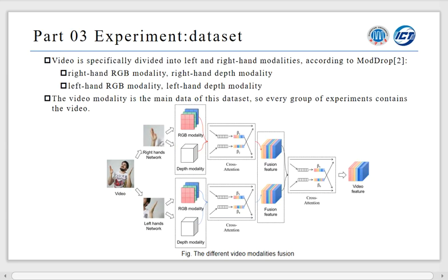Video is specifically divided into left and right hand modalities according to Mockdrop, and we can get right hand RGB and DIPs modality, left hand RGB and DIPs modality. The video fusion procedure as the figure shown. There are three fusion stages. The video modality is the main data of this dataset, so every group of experiments contains the video.